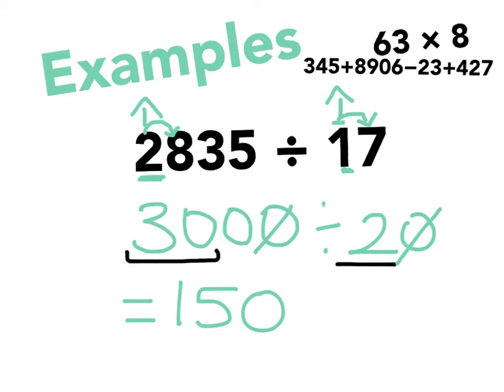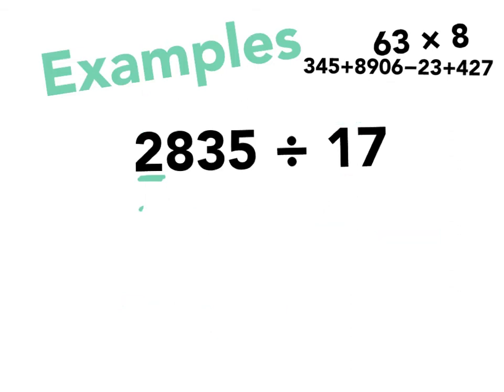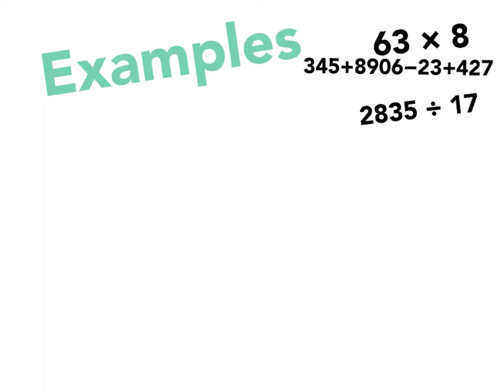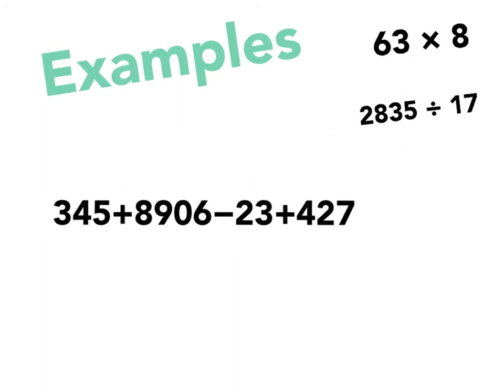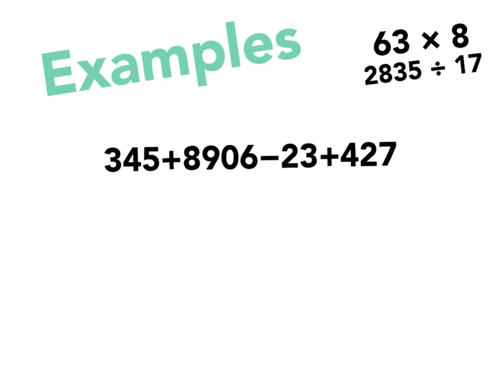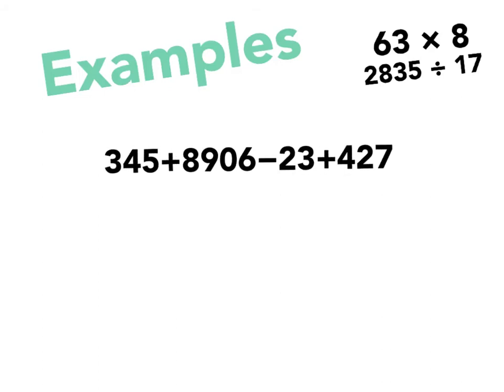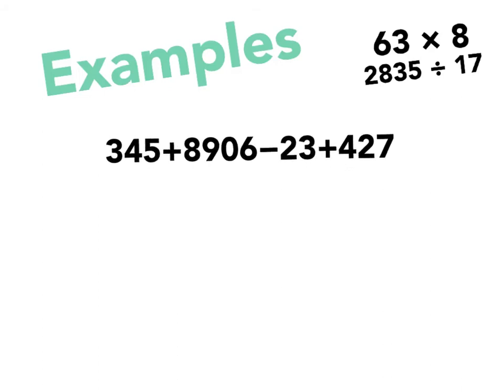Okay, let's look at my other example here. Big long number sentence. Really big long number sentence. I've got 345 plus 8906 minus 23 plus 147. That's pretty hard to do in my head.